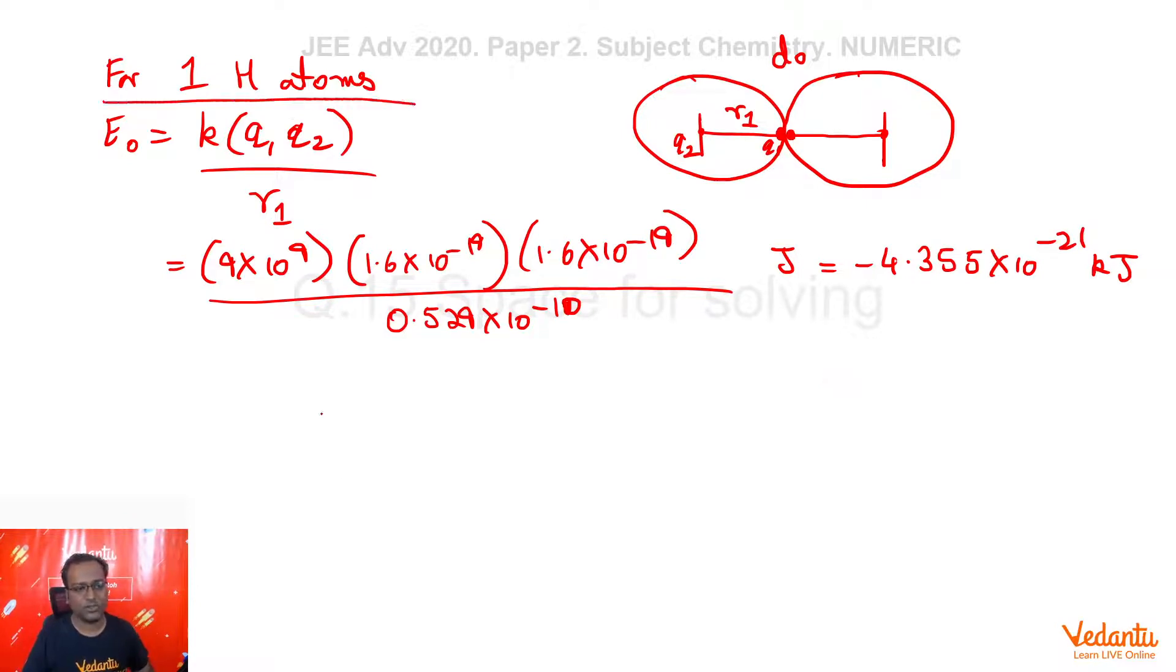Now, this is for one hydrogen atom. One hydrogen atom. We have to consider two hydrogen atom. So, for two hydrogen atom, let's simply multiply it by two. Your answer will be minus 4.355 into 10 to the power minus 21 into 2 kilojoules.